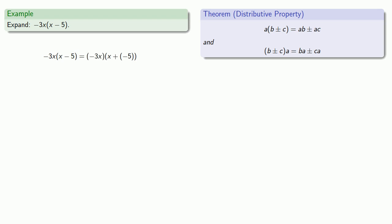That's additive inverse 3x times x plus additive inverse 3x times additive inverse 5. That first term becomes additive inverse 3x squared. Multiplication is associative and commutative, so I can bring the two numbers together. Additive inverse 3 times additive inverse 5 gives us 15x.